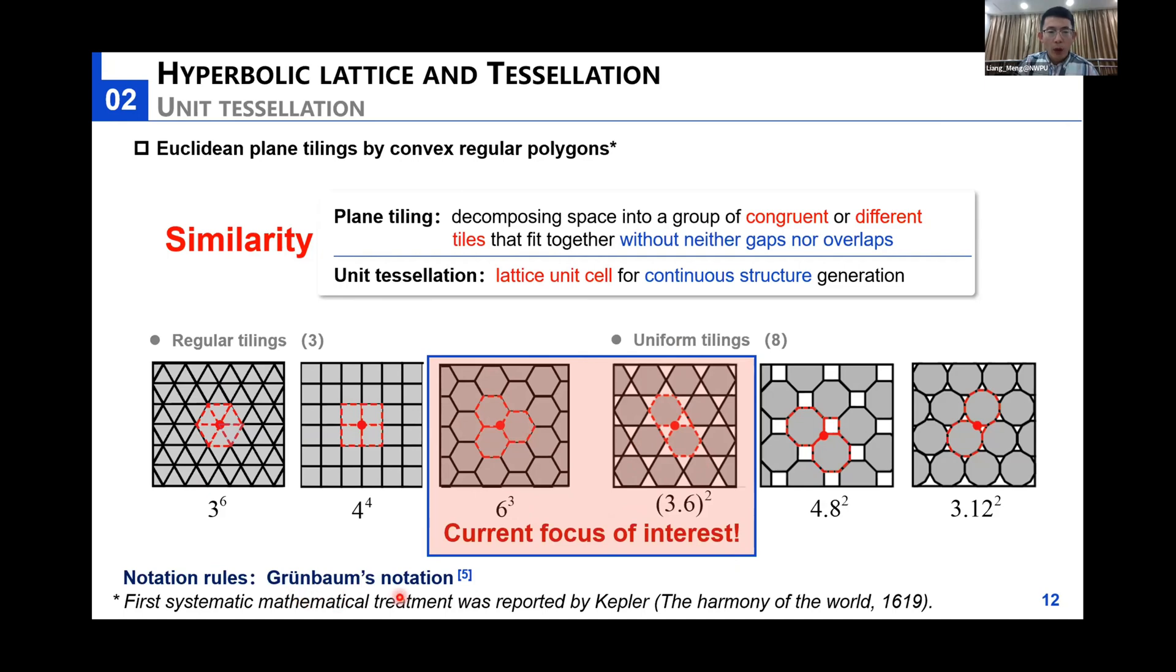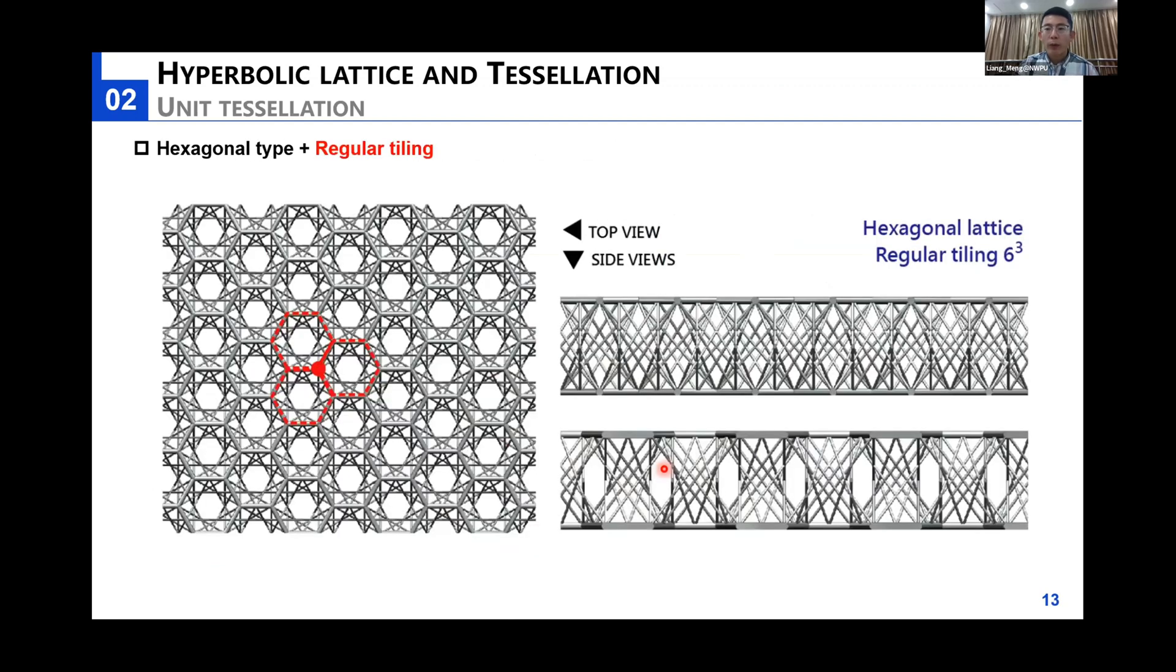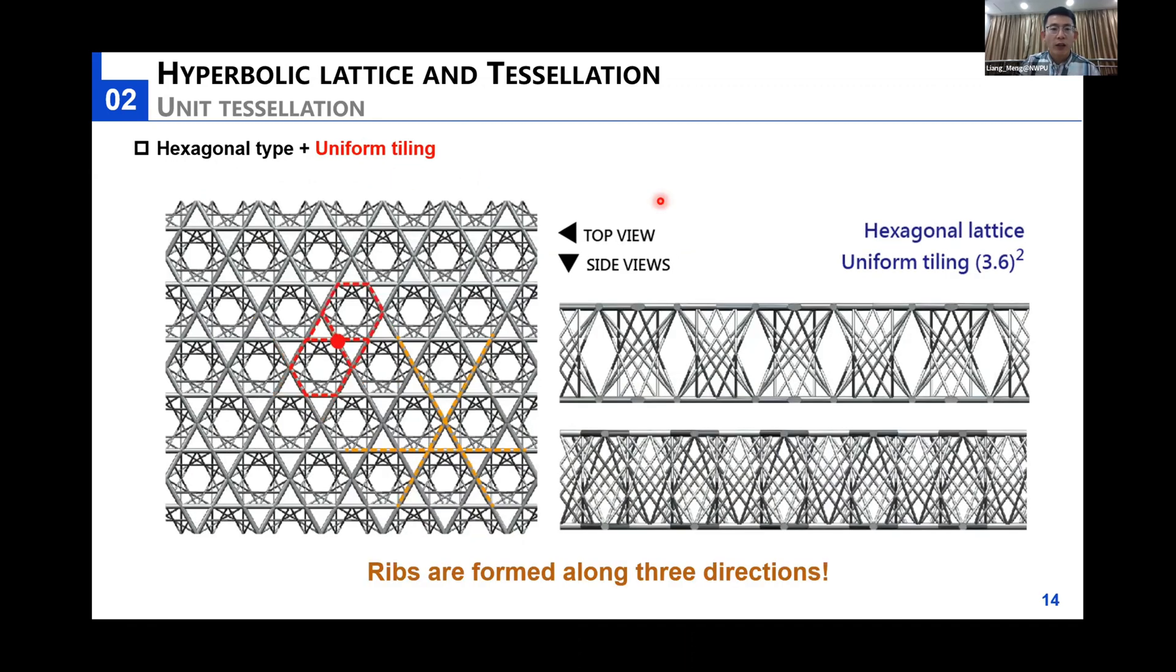We adopt the Grünbaum notation for each tessellation: 6³ and 3.6². The superscript indicates the number of polygons around these vertices, and the base indicates the number of edges of your polygon. Here we present different views of the lattice structure combining the hexagonal type unit cell with the regular tiling strategies. We change another tiling strategy using the uniform tiling, and we see the topology of these lattice structures has been changed.